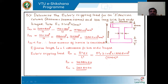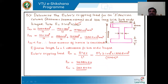Let us read the problem. Determine the Euler's crippling load for an I-section column: total depth 400 mm, total breadth 200 mm, and thickness of the web 10 mm. The column is 10 meters long with both ends hinged. Young's modulus for the material is 2.1 into 10 to the power 5 newton per mm squared. Finding Ixx: it is equal to 200 into 400 cubed by 12 minus 190 into 380 cubed by 12, where 380 is 400 minus 10 minus 10, and 190 is 200 minus 10. Subtracting gives the moment of inertia along the x-axis.